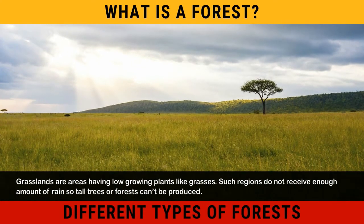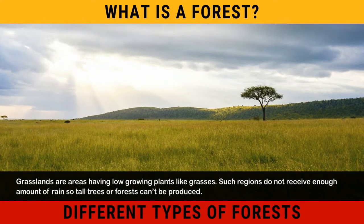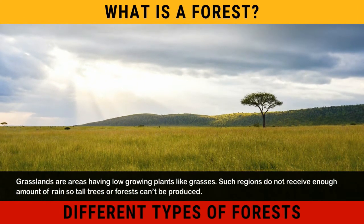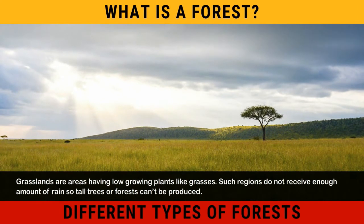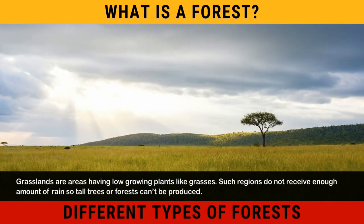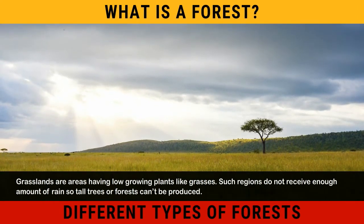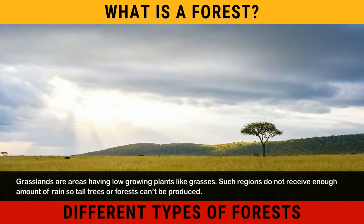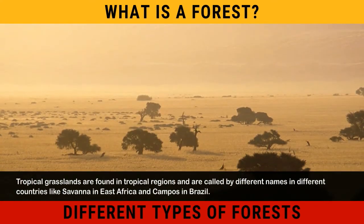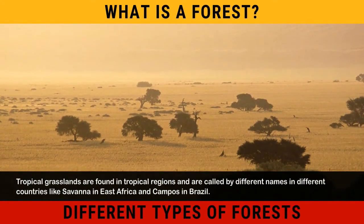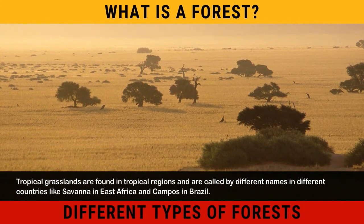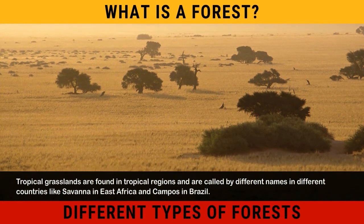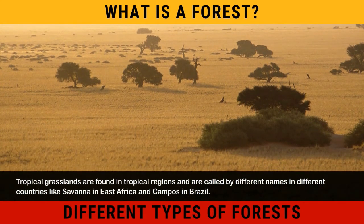Grasslands are areas having low-growing plants like grasses. Such regions do not receive enough amount of rain, so tall trees or forests can't be produced. Tropical grasslands are found in tropical regions and are called by different names in different countries, like Savannah in East Africa and Campos in Brazil.